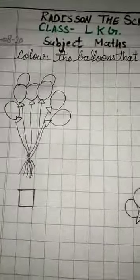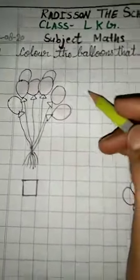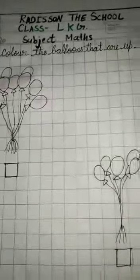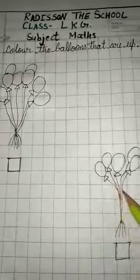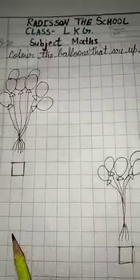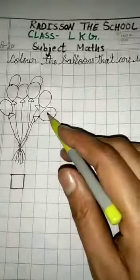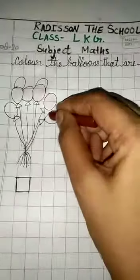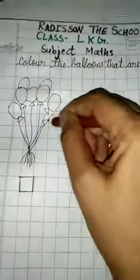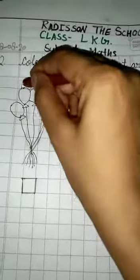Okay, next work is color the balloons that are up. Jo balloons upar hai, up area mein color karna hai. Different colors use karke. These balloons are up, so color them. Remember to color fully. Okay students, thank you, bye bye.